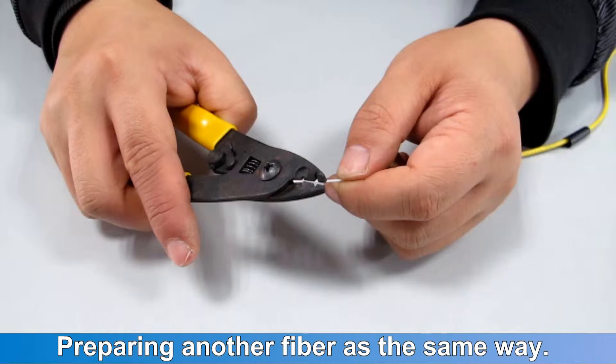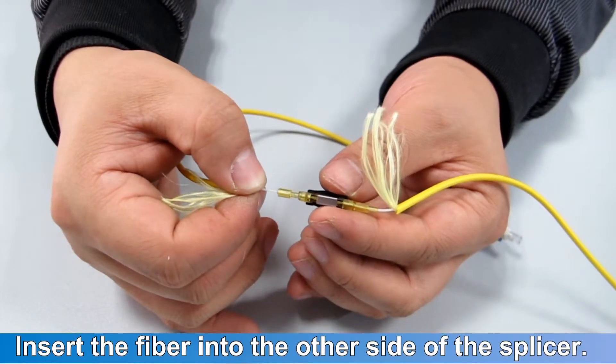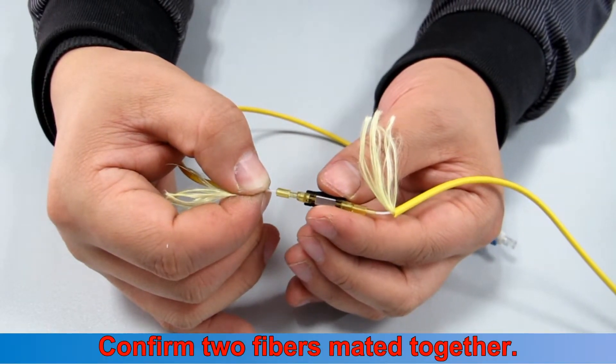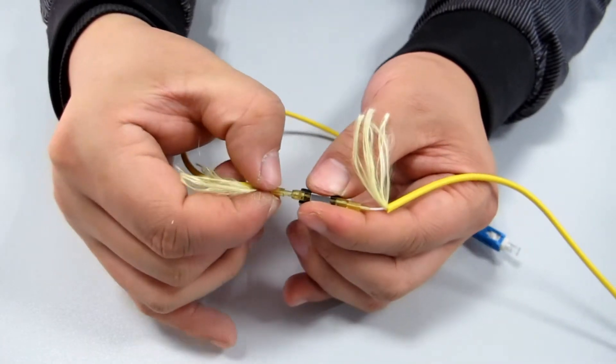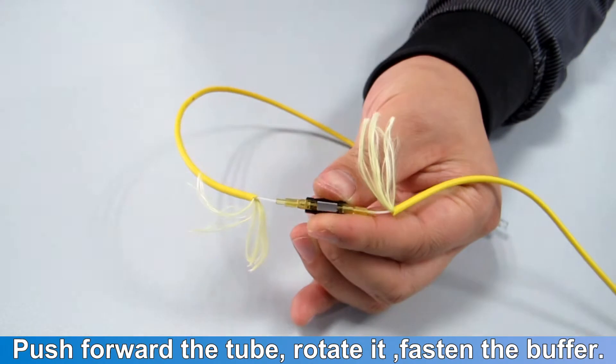Prepare another fiber the same way. Insert the fiber into the other side of the splice. Confirm two fibers are mated together. Push forward the tube, rotate it, and fasten the buffer.